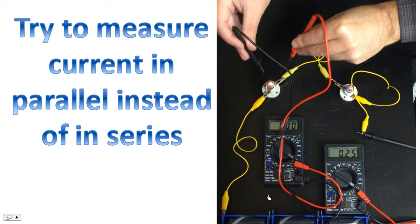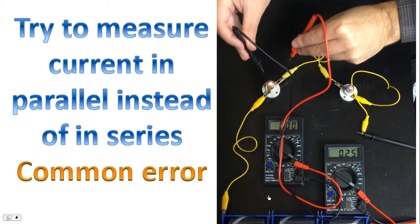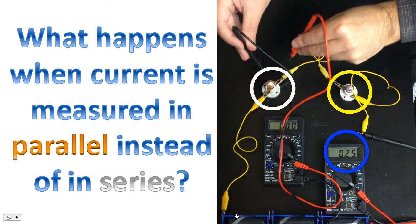Please note, current is supposed to be measured in series. The multimeter in the diagram that is showing 0.25 amps is in series with the circuit. Now why are we doing this? Well, this is a common error that I've seen people make. Instead of using the multimeter and placing it in series with the circuit, people will sometimes place it in parallel. They're going to do what I'm about to do in this video.